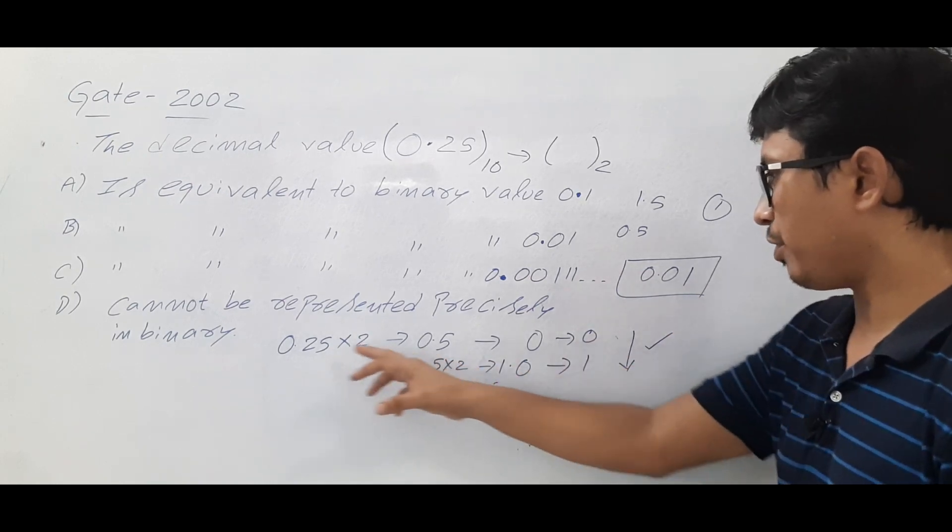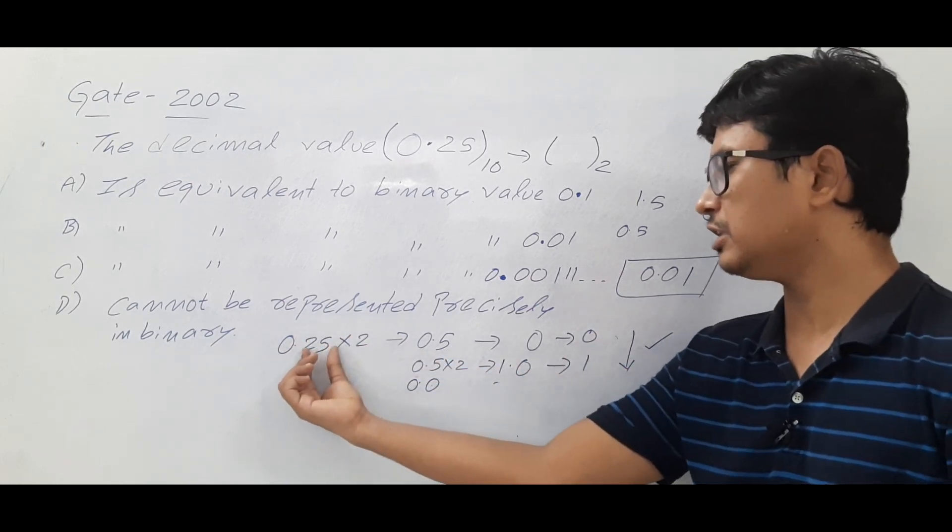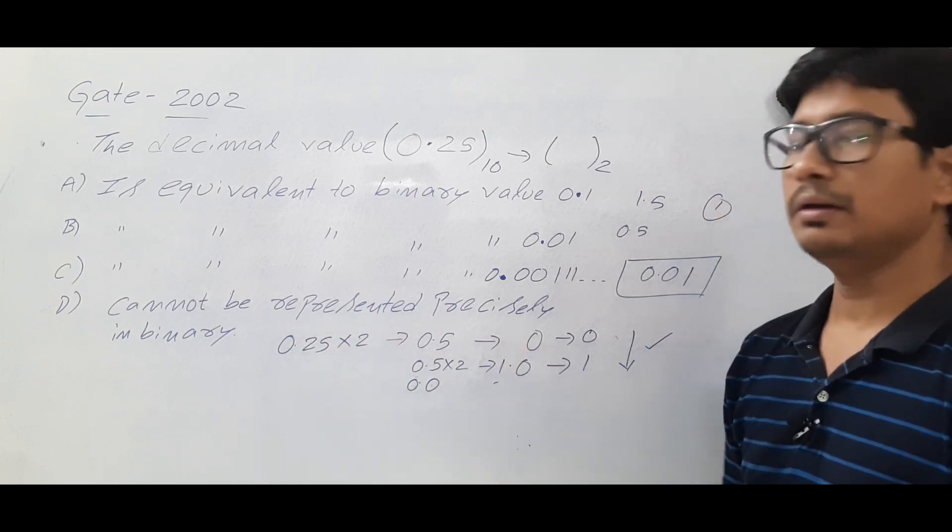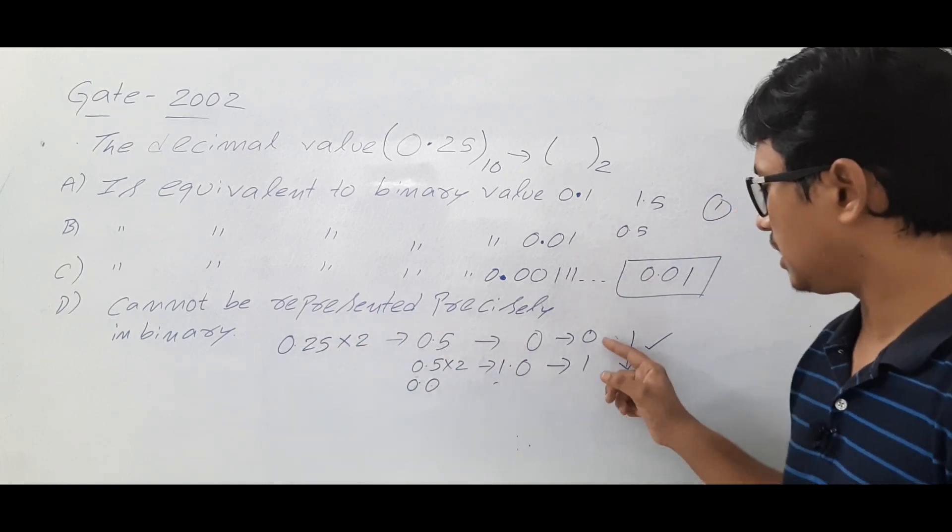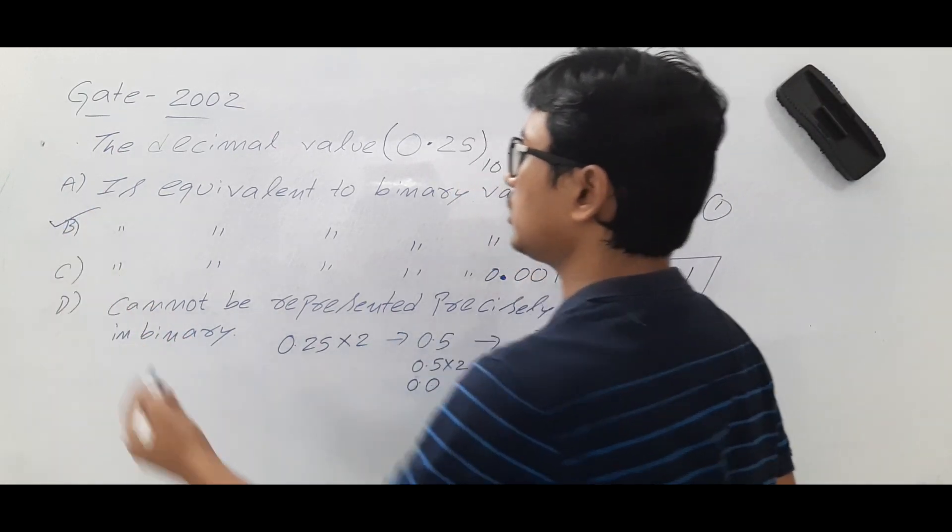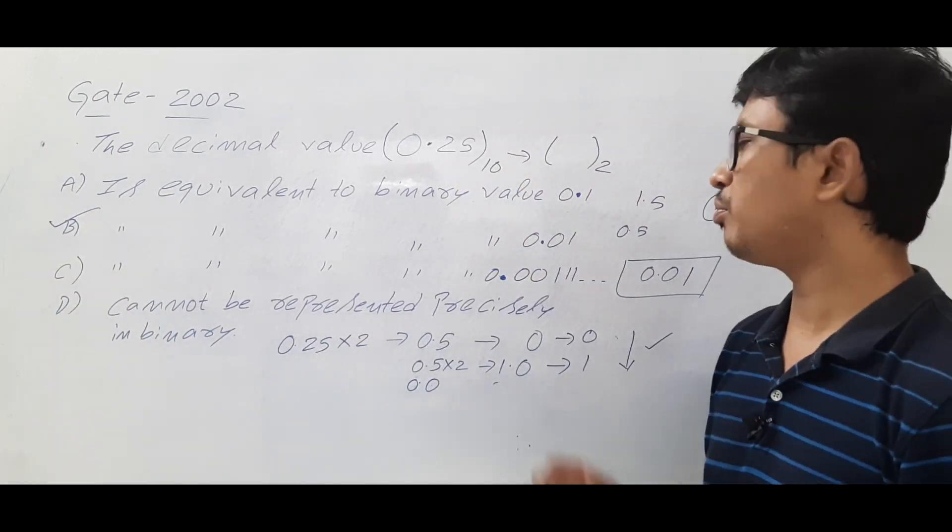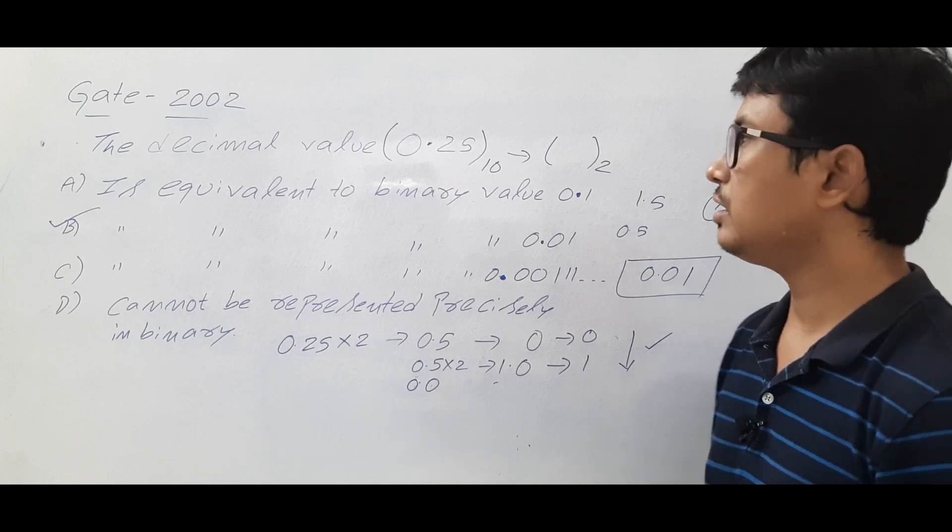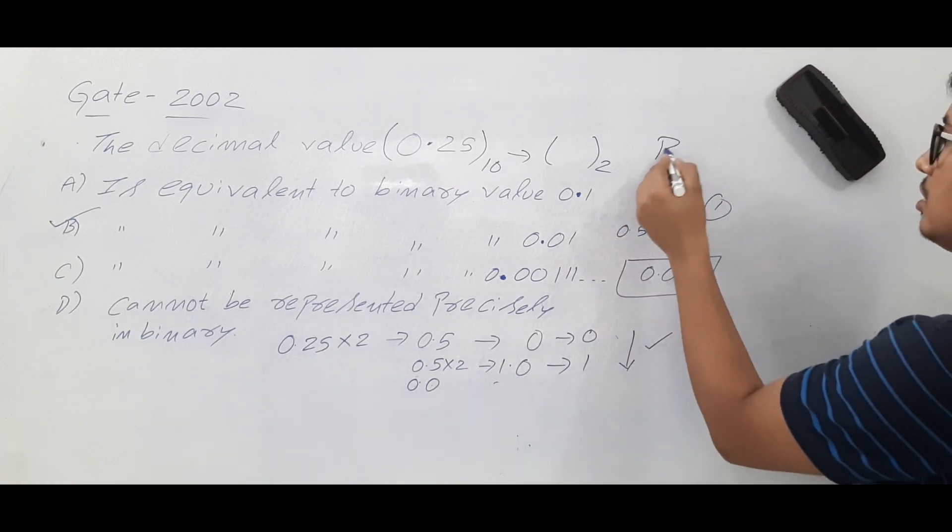This part you will take and this part only you're converting into a binary number. So this part is 0.1. So what is the right answer? It is equivalent to binary value 0.01. The right answer for this question is option B.